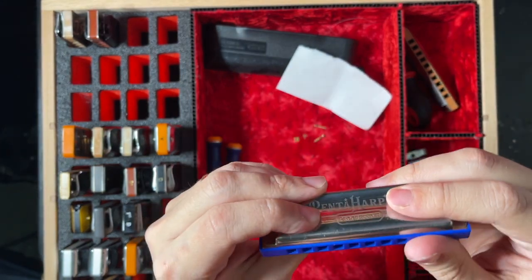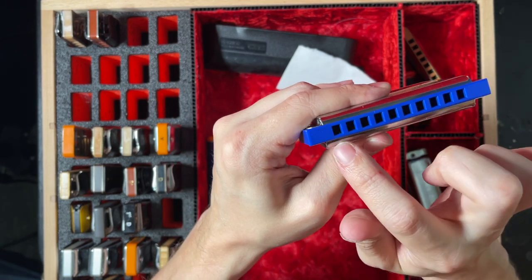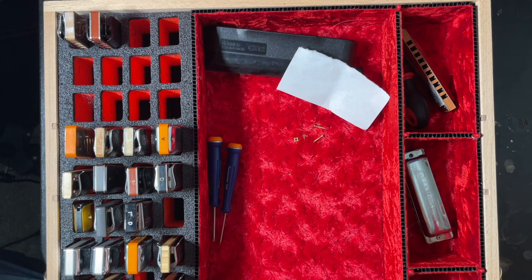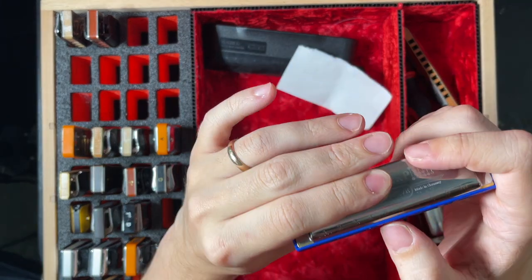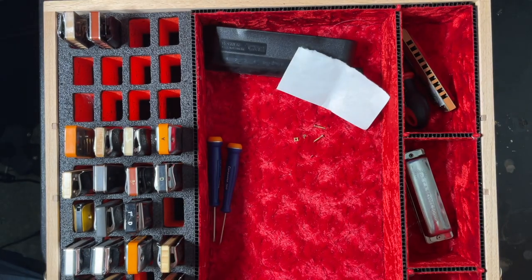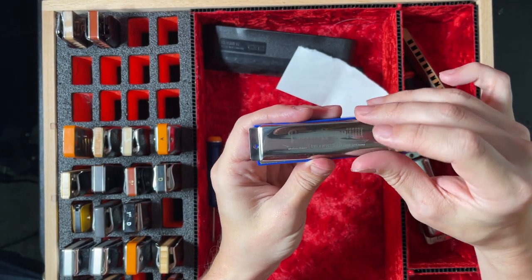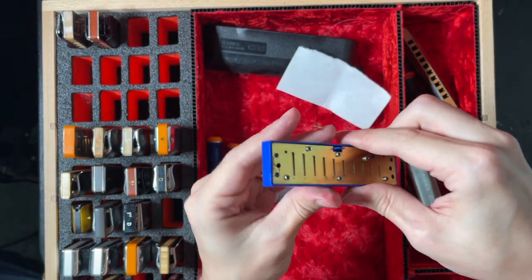Now here is hole one blow going to the one draw, I'm going to try it. Here we go. [plays] There we go, nice and snappy. Now here is hole four going to the four draw. [plays] Alright, so that is perfect on this harmonica and now it is well set up.